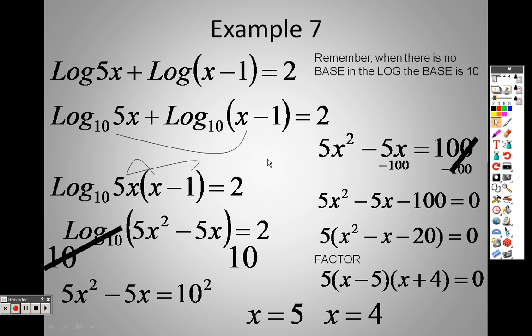And once again, you can check them both. Plug in a 5 here. 5 times 5 is 25. 5 minus 1 is 4. 25 times 4 is 100. So it's log base 10, 100. So you can do log 100 divided by log 10 in your calculator, and you would get 2.